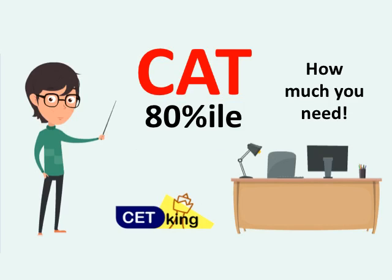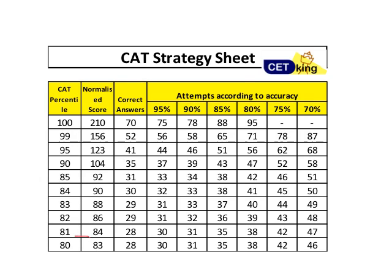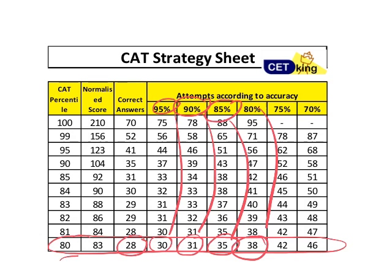If you're targeting 80 percentile, you need to score 28 marks — that's the net score after deducting negative marking. So net-net, your score has to be 28 marks. This is based on normalized scores given by the CAT team. With 95% accuracy you should attempt 30 questions, 90% accuracy attempt 31, 85% accuracy attempt 35, 80% accuracy attempt 38, and if your accuracy is poor at 70%, you need to attempt 46 questions to reach 28 marks for 80 percentile.